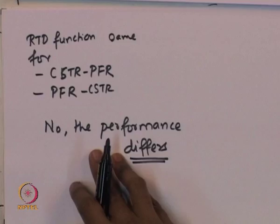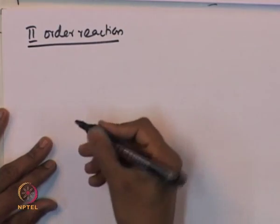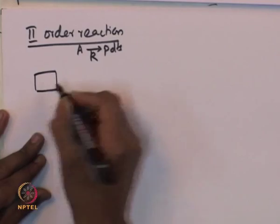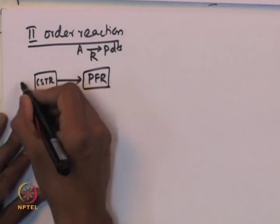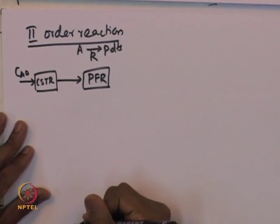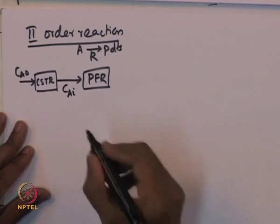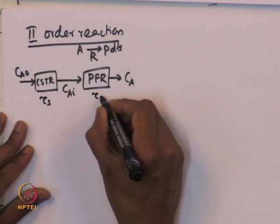First order reaction is actually an exception — only for first order reaction will the conversion be the same irrespective of the order in which the CSTR and PFR are placed. Let us take a second order reaction as an example: A going to products with specific reaction rate K. Consider first the combination of CSTR followed by a plug flow reactor.